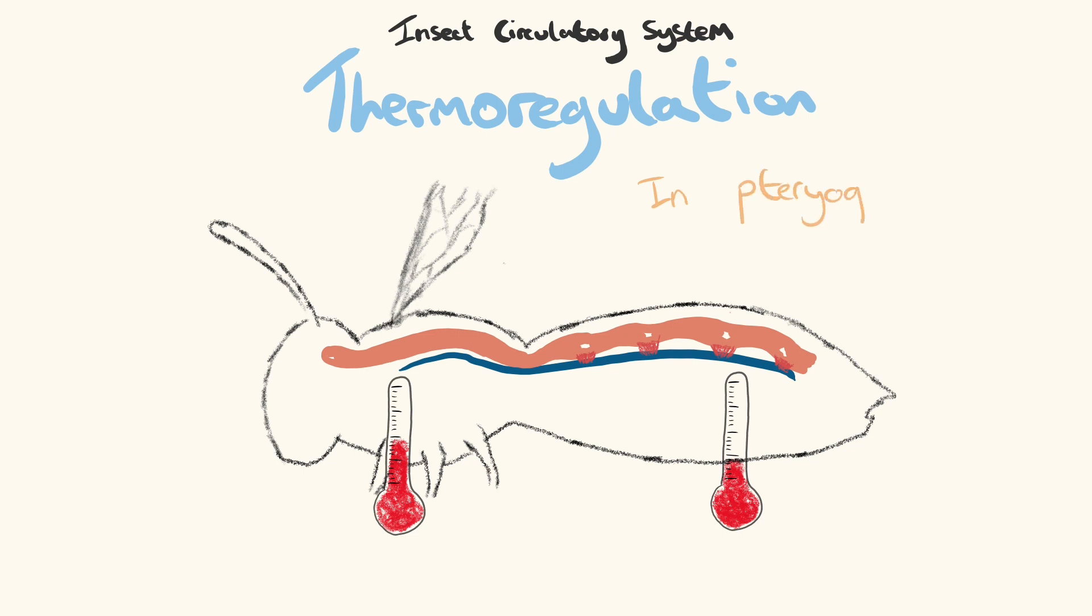In winged insects, flight muscle contraction elevates thoracic temperatures. Haemolymph flow can then be exploited to keep this heat localized.